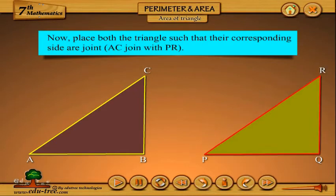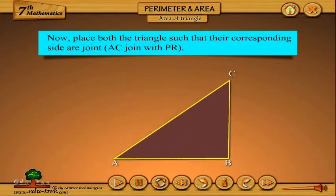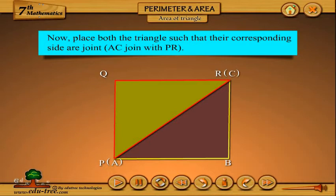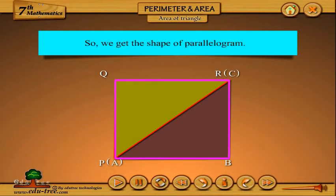Now, place both the triangles such that their corresponding sides are joint, AC joint with PR. So, we get the shape of a parallelogram.